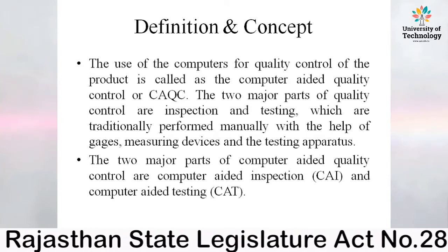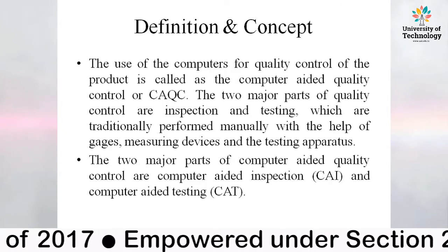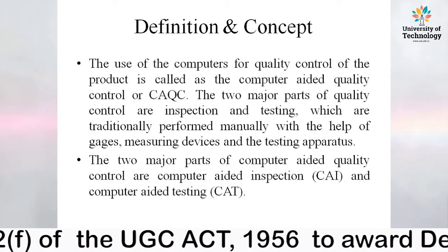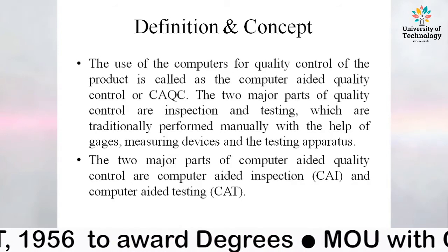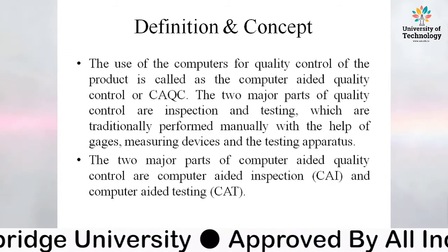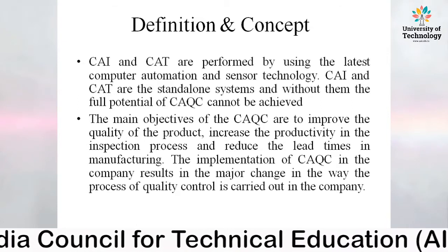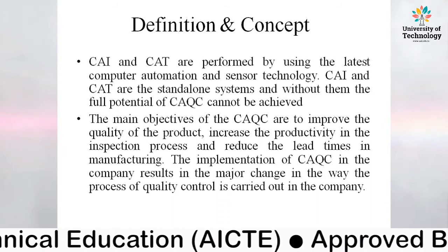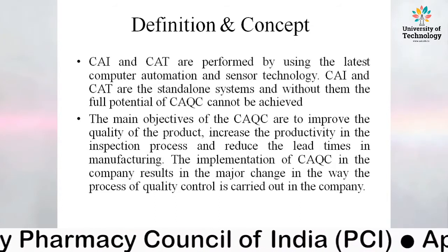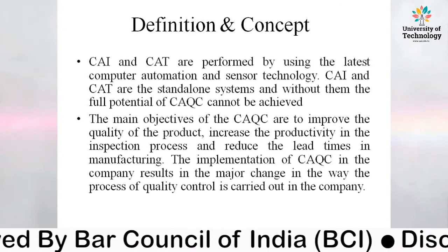The two major parts of quality control are inspection and testing, which are traditionally performed manually with the help of gauges, measuring devices, and testing apparatus. The two major parts of Computer Aided Quality Control are Computer Aided Inspection (CAI) and Computer Aided Testing (CAT), performed using the latest computer automation and sensor technology. CAI and CAT are standalone systems, and without them the full potential of CAQC cannot be achieved.